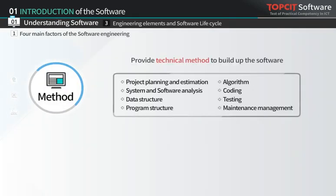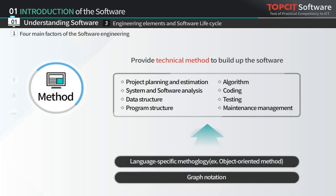Software engineering provides technical methods to develop software. These methods are composed of project planning and estimation, system and software analysis, data structures, program structures, algorithm, coding, testing, and maintenance activities. We sometimes also adopt other specific evaluation methods, such as language-specific methods, graph notation, and software quality.